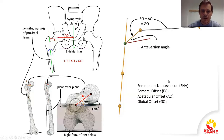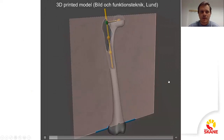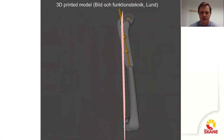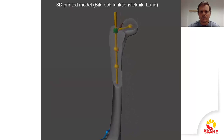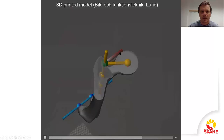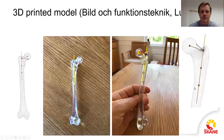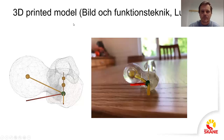So here we have a simplified version of this explanation. I got help from Bilden Funktionsteknik in Lund, which is the group that helps with 3D printing, and they made this model for me for 3D printing. I've colored it, and you can see this line here lying on top of the plane. Now I have a model which I can just carry around in my pocket, and whenever people ask me what I'm talking about, I just show them on the model. It makes my life easier. Thank you.